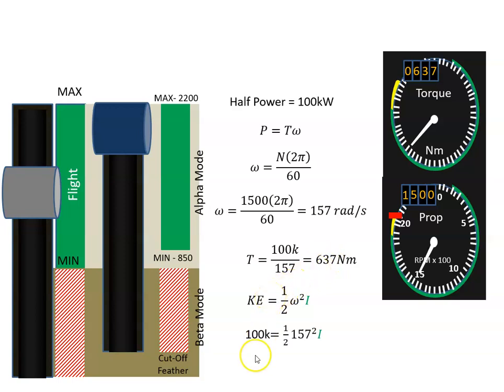We can say that 100 kilojoules equals half times I times omega squared. From that I can work out the moment of inertia of this propeller, and it's 8.1 kilogram meter squared.